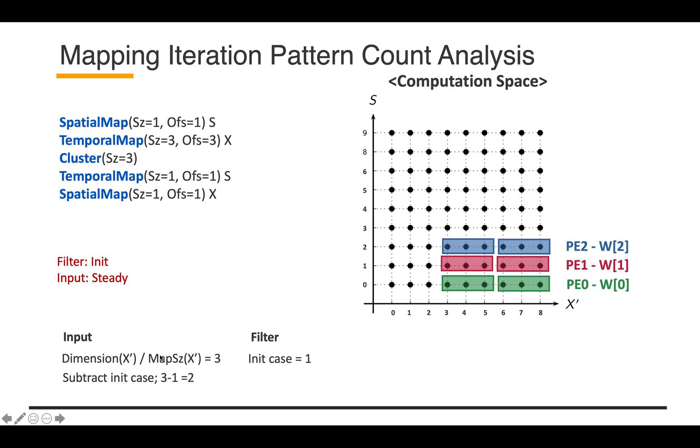In this case, the mapping size and offset is the same, so it doesn't matter. If we divide the dimension size nine by three, which is the mapping size in output dimension, then we get three. But we need to exclude the initial case, then we get two. So we can easily compute this pattern occurs twice.